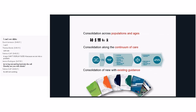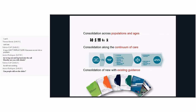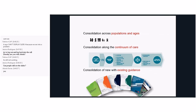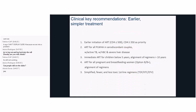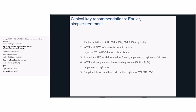We also had simpler, fewer, and less toxic first-line regimens being recommended. On the operational side, the use of fixed-dose combination was a critical recommendation. We also had improved patient monitoring with increased use of viral load. Task-shifting, decentralization, and integration were seen as critical elements of better service delivery models, and community-based testing and ARV delivery were also part of these guidelines.